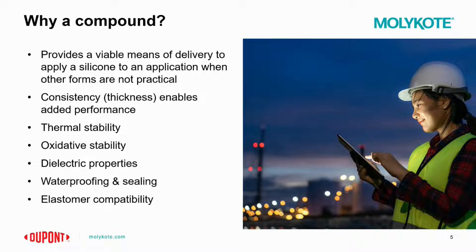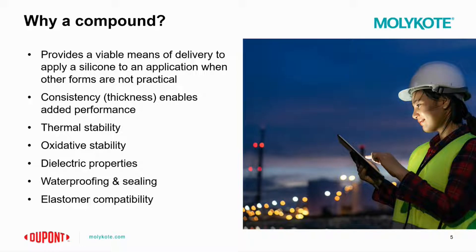So why use a compound? In general, what you're getting from a compound is a means to deliver that silicone fluid to a place that otherwise couldn't receive it without a thickener holding it in place. In areas where you can't simply apply a silicone fluid, the compound keeps it at the application site. You get thickness, stability, thermal stability, oxidative stability, and dielectric properties for electrical applications.